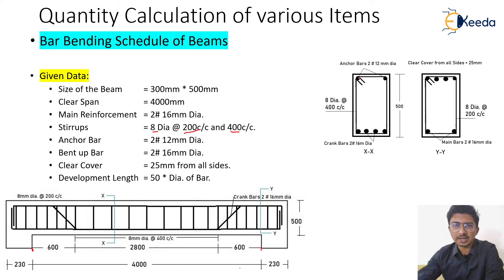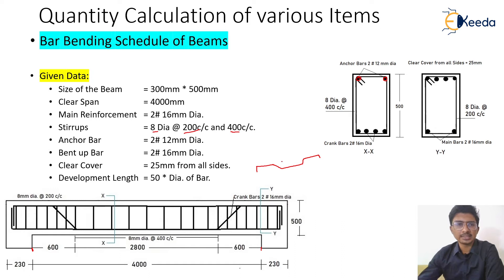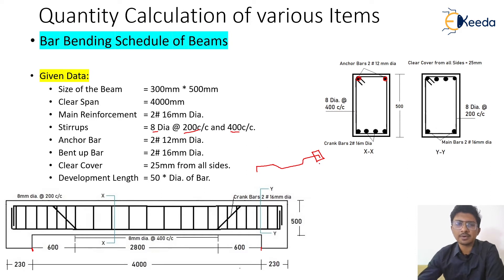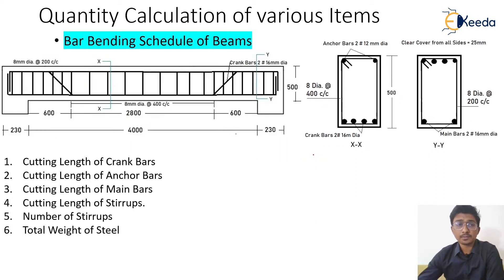The anchor bars are provided at the top of the beam — two numbers of 12 mm dia. The bent-up bars, provided for better load distribution and transfer, are 16 mm dia in two numbers. The clear cover is 25 mm from all sides. The development length is given as 50 times the diameter of the bar — this is the extra length of the bar going into the column for proper anchorage.